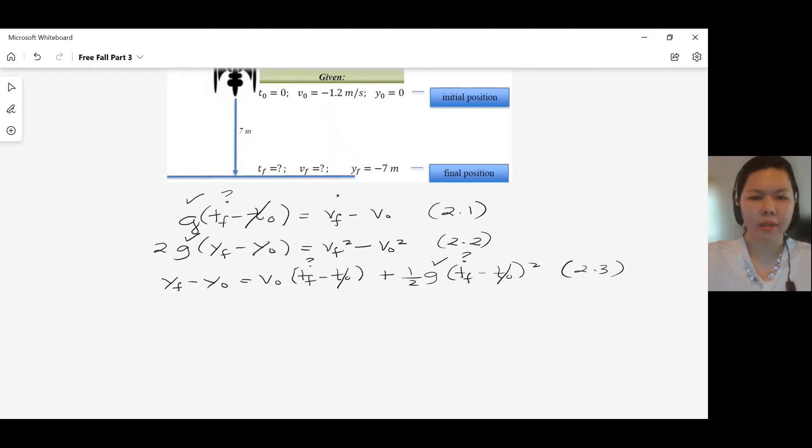The final velocity is what we are looking for. V0 here in the given is negative 1.2 meters per second, so check.